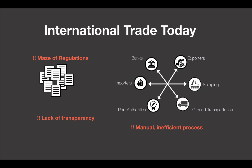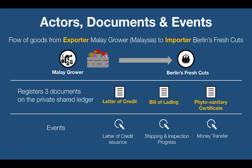In this demo we will consider the flow of goods — in this case flowers — from an exporter in Malaysia to an importer in Germany. As these flowers move between the two parties, a number of events occur and are recorded. Documents like letter of credit, bill of lading, and phytosanitary certificate are generated and registered on the blockchain, creating a distributed trusted ledger that cuts across all of these different parties.